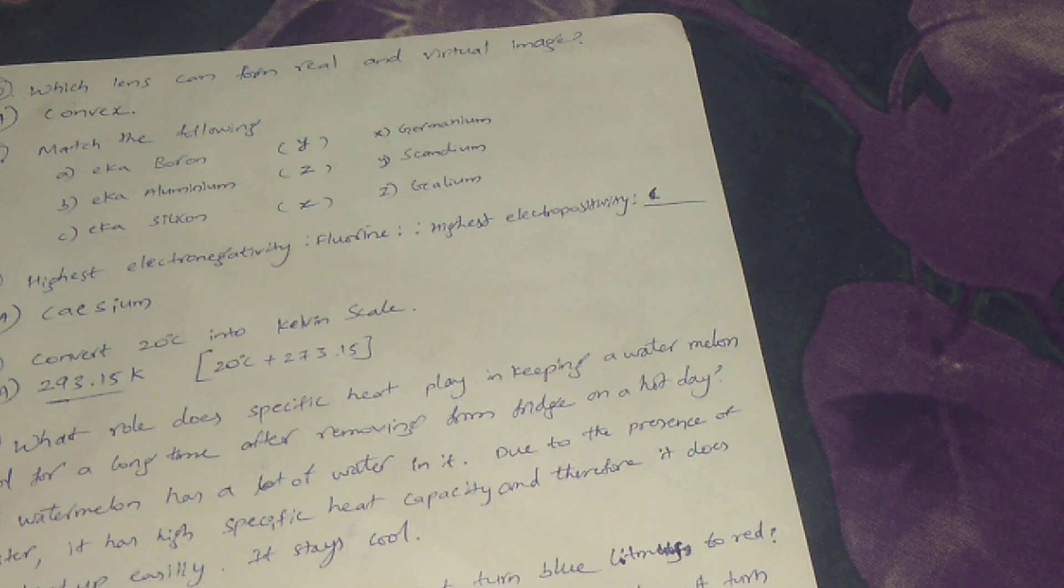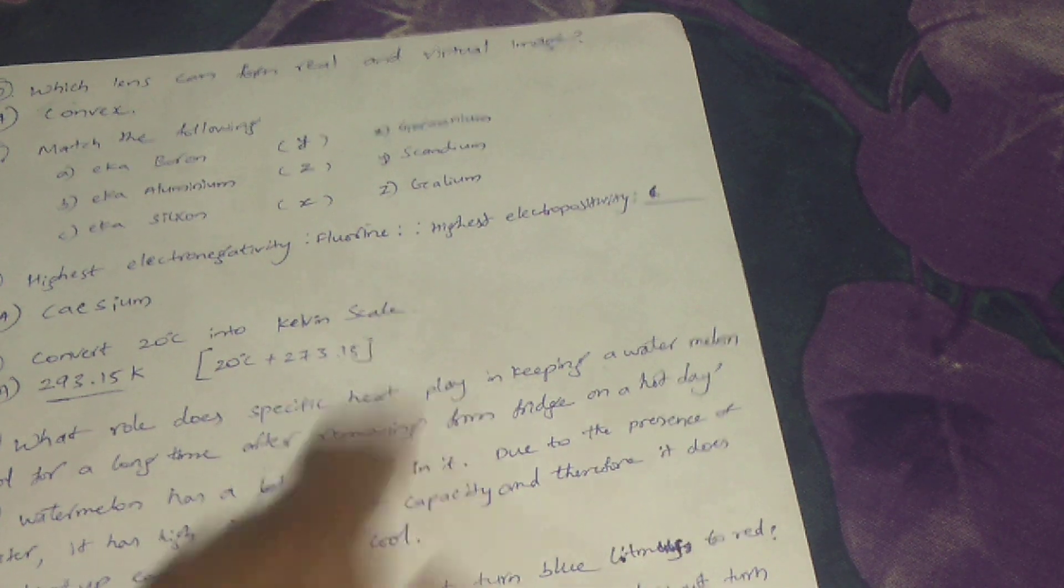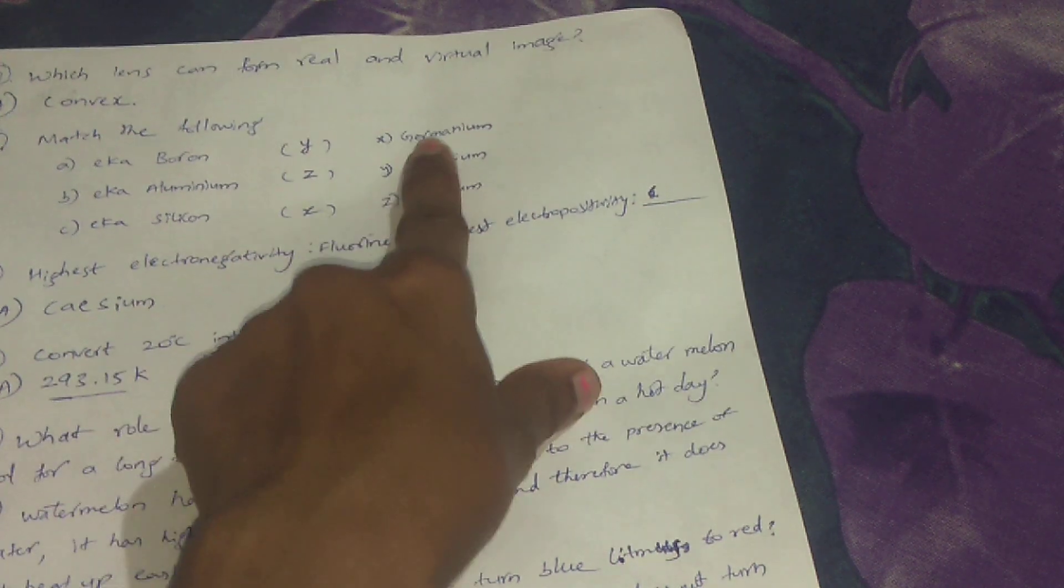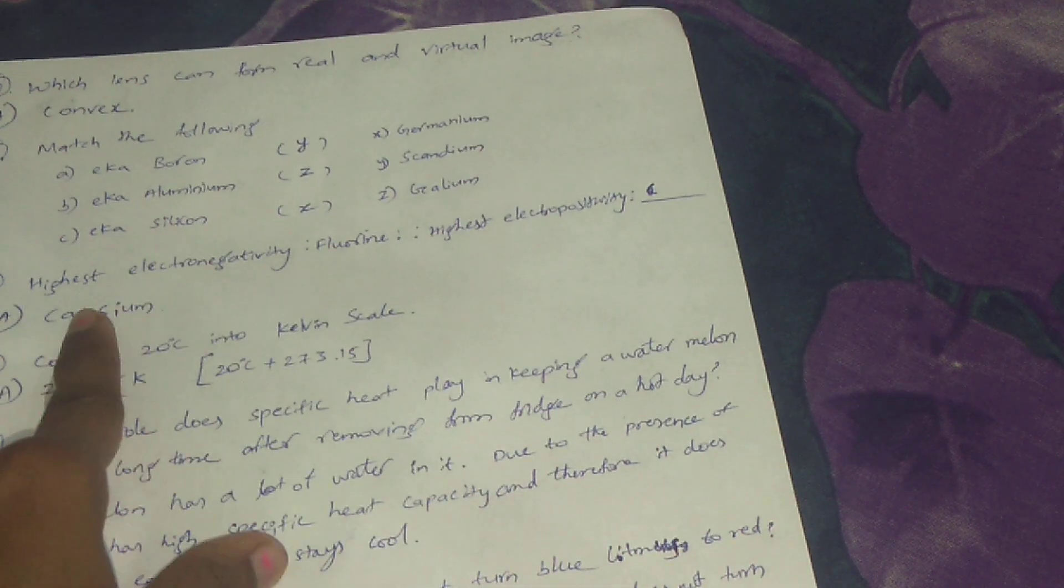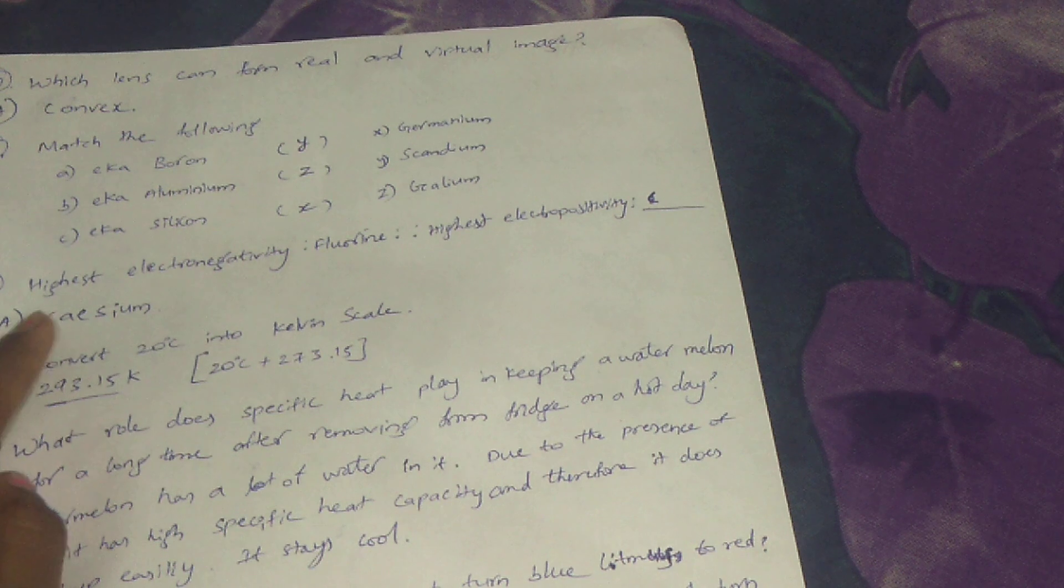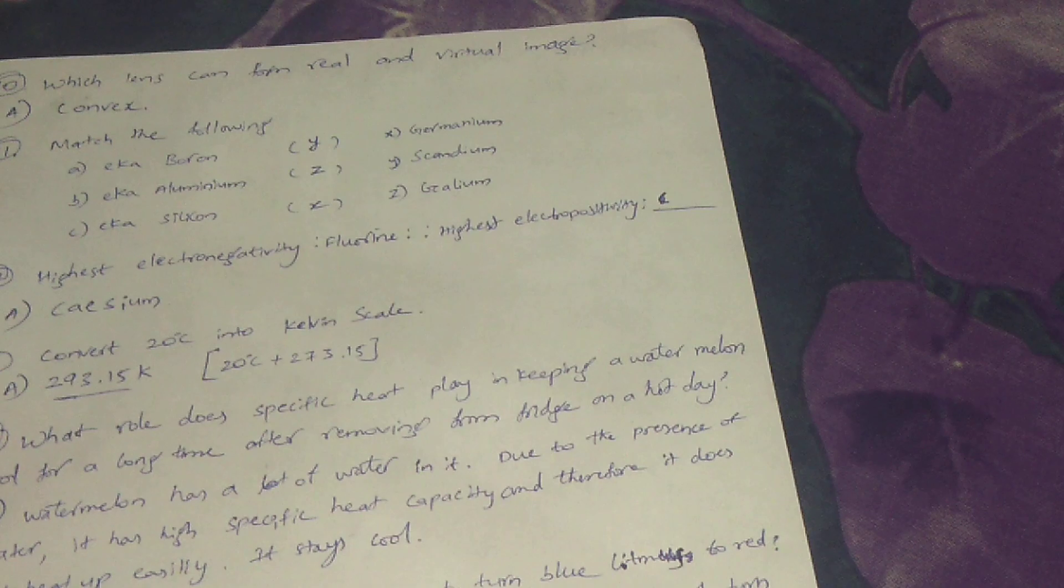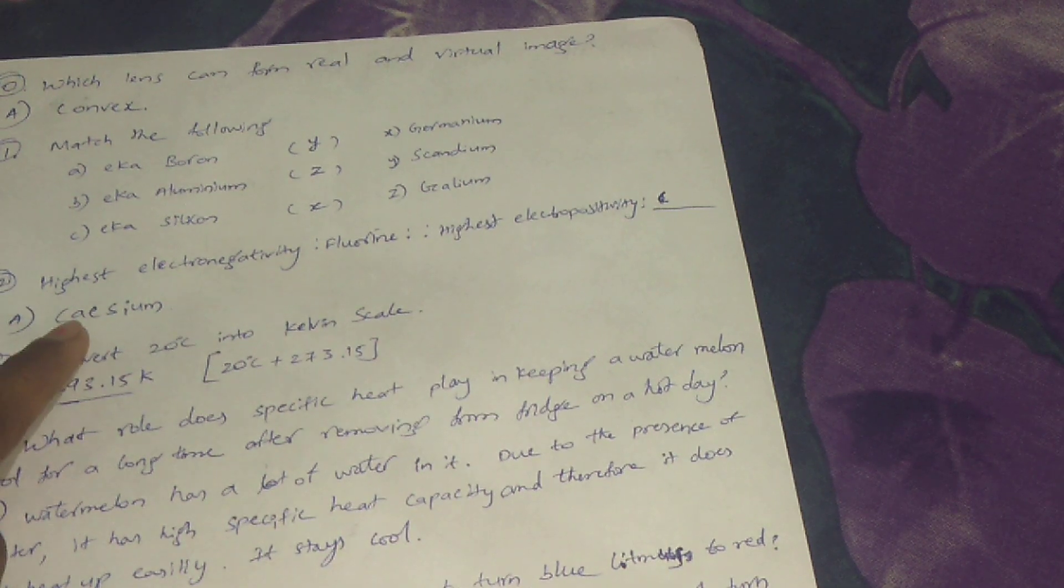Match the following: Eka boron - scandium, eka aluminium - gallium, eka silicon - germanium. Twelfth question, highest electronegativity is fluorine, lowest electronegativity is cesium.